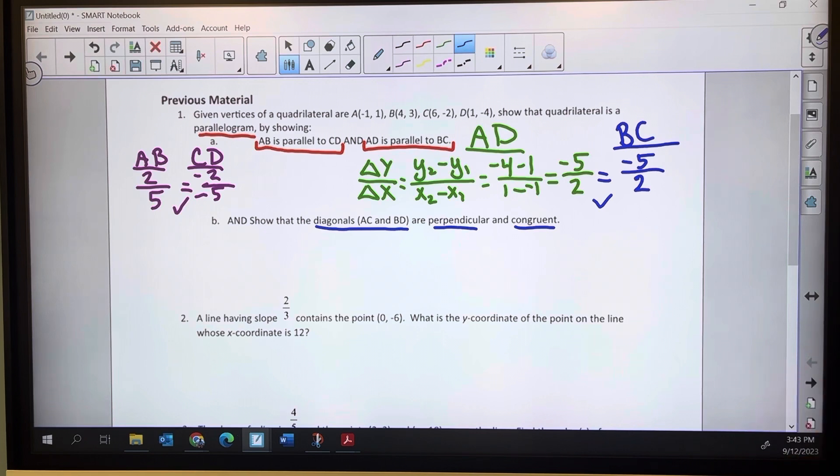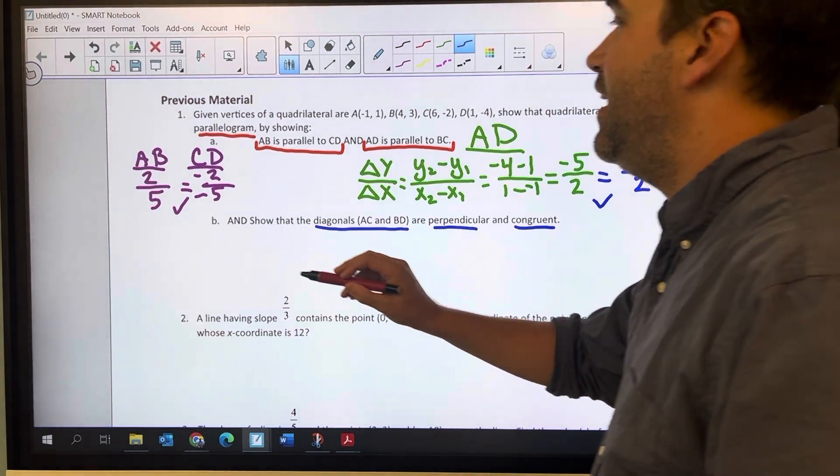Now we're going to show the diagonals are perpendicular and congruent. So let's talk about perpendicular first. Perpendicular is a slope. Remember, look for opposite reciprocals.